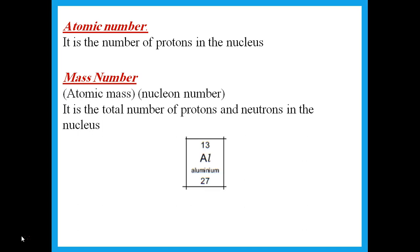When you look at the periodic table, every element has two numbers. Always remember that the atomic number is the smaller number. For aluminium, I have 13 and 27 — the atomic number is 13, meaning aluminium has 13 protons. The larger number, 27, is the mass number — the total number of protons and neutrons in the nucleus.